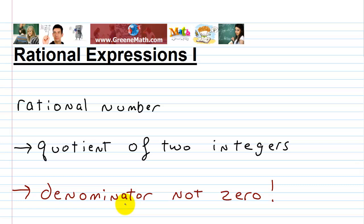In this lesson, we're going to start to learn about what's called rational expressions. So let's start with a pre-algebra topic: what is a rational number? A rational number is basically the quotient of two integers, and the denominator is not zero.